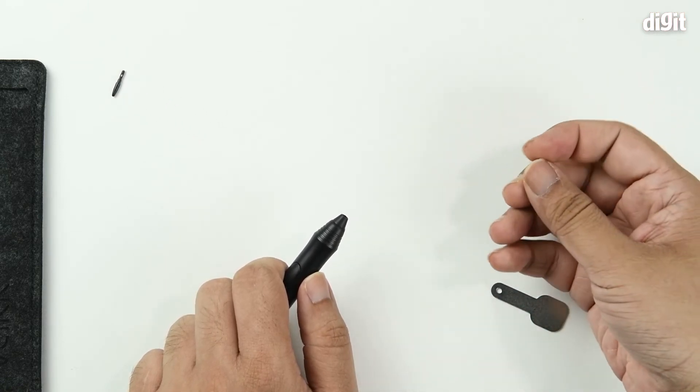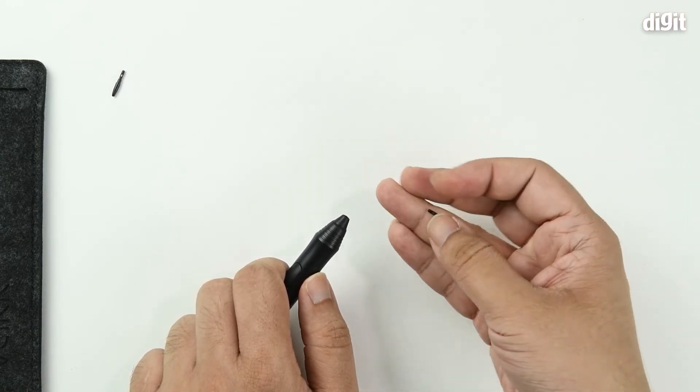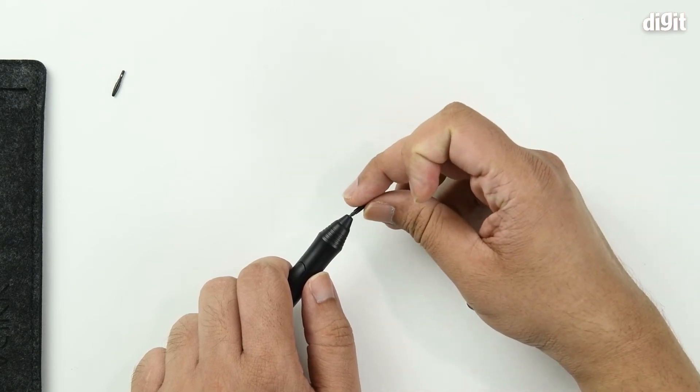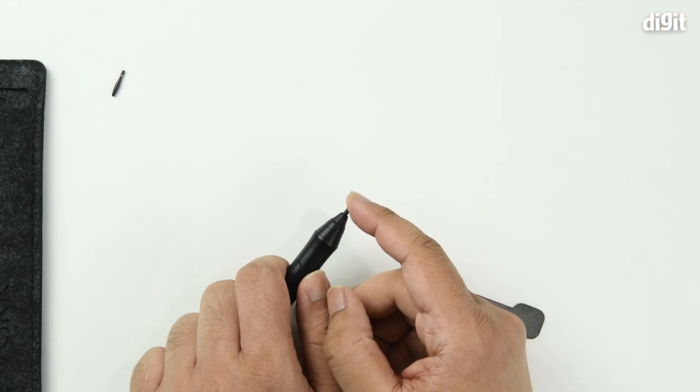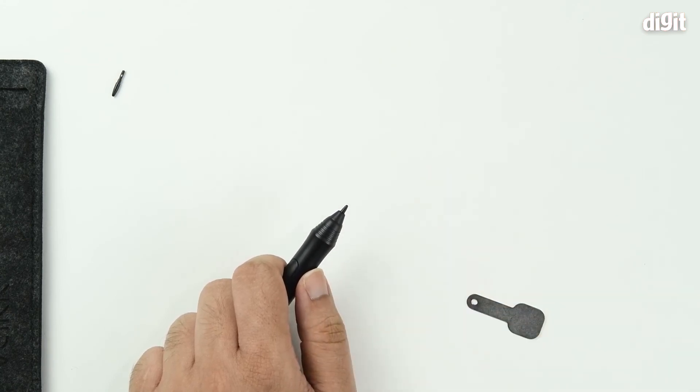Next, find the replacement nib, insert it into the front and apply a light amount of pressure. That's it.